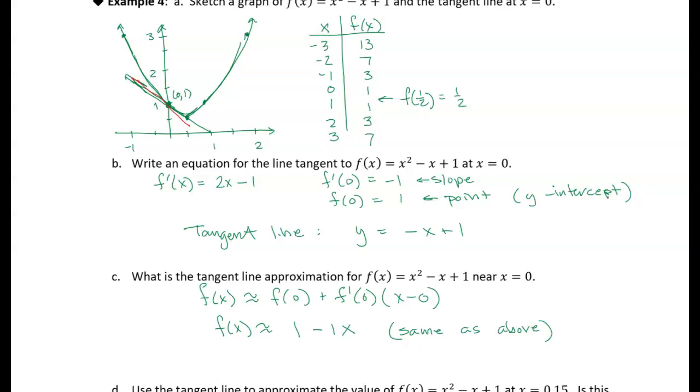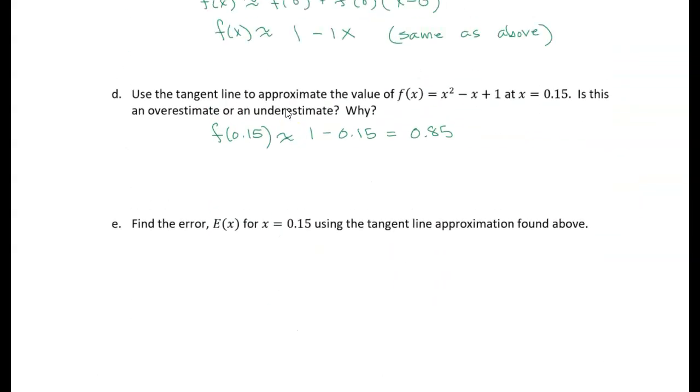So if the tangent line is below the curve of the graph, then the value at the tangent line is less than the value of the actual curve, the actual function. So that tells us that our tangent line approximation is an underestimate. So the tangent line is below the graph of the function f of x. So this is an underestimate.